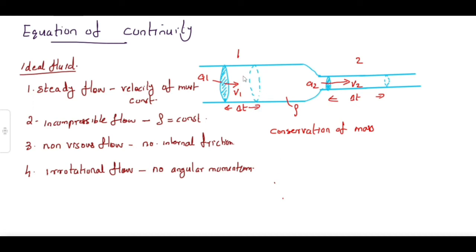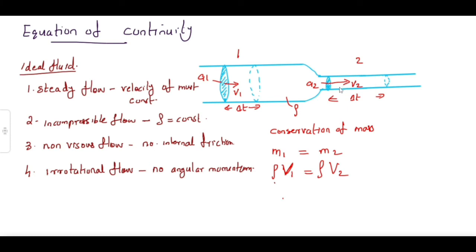Let M1 be the mass of liquid flowing through the first cross-section and M2 be the mass through the second cross-section. So M1 equals M2. We know that mass equals density times volume. Since it is the same liquid, density rho remains the same. So: rho times V1 equals rho times V2, where V1 and V2 here represent the volumes of liquid passing through each section in the time interval delta T.